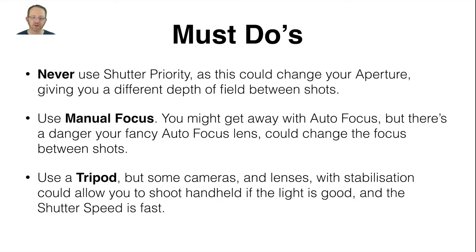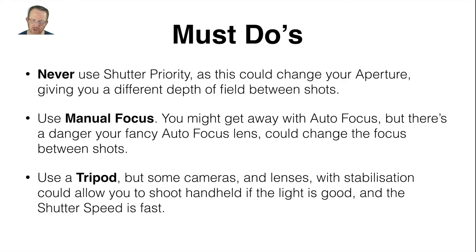Must-do's: never use shutter priority as this could change your aperture, giving you a different depth of field between shots. Use manual focus — you might get away with autofocus but there's a danger your autofocus lens could change the focus between shots. I've taken some shots today with my point-and-shoot Leica X1, which is only 12 megapixels, and it's autofocus — you can get away with it, but it's best to use manual focus. Use a tripod, but some cameras and lenses with stabilisation could allow you to shoot handheld if the light is good and the shutter speed is fast. I'll show you when we get to Lightroom that I've done some handheld shots merged to HDR, and it's got rid of the ghosting really well.